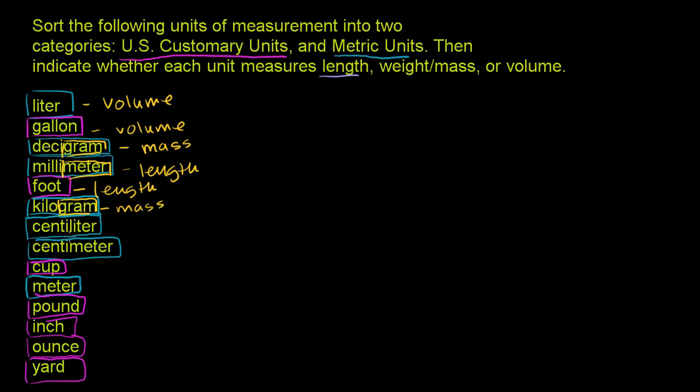Centiliter, that means one-hundredth of a liter. Liter, we already figured out, is a unit of volume. Centimeter, we already figured out. Meter is a unit of length. Centimeter means one-hundredth of a meter. So this is a unit of length.